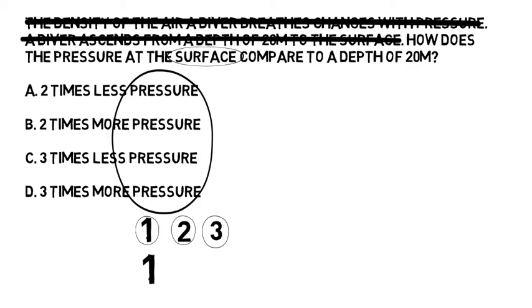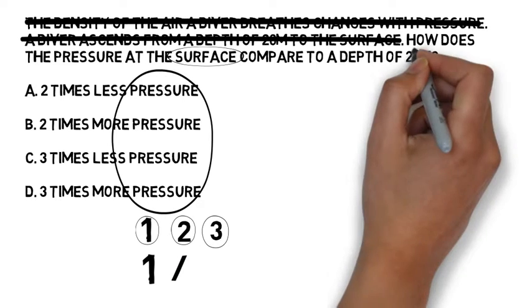Now, we're on step two. Step two with density or pressure questions. If there are no bar, psi, minutes, volumes, anything like that involved, then we know it's a simple density pressure question and simple density pressure questions are answered with the division symbol. So, we're going to enter in the division symbol.